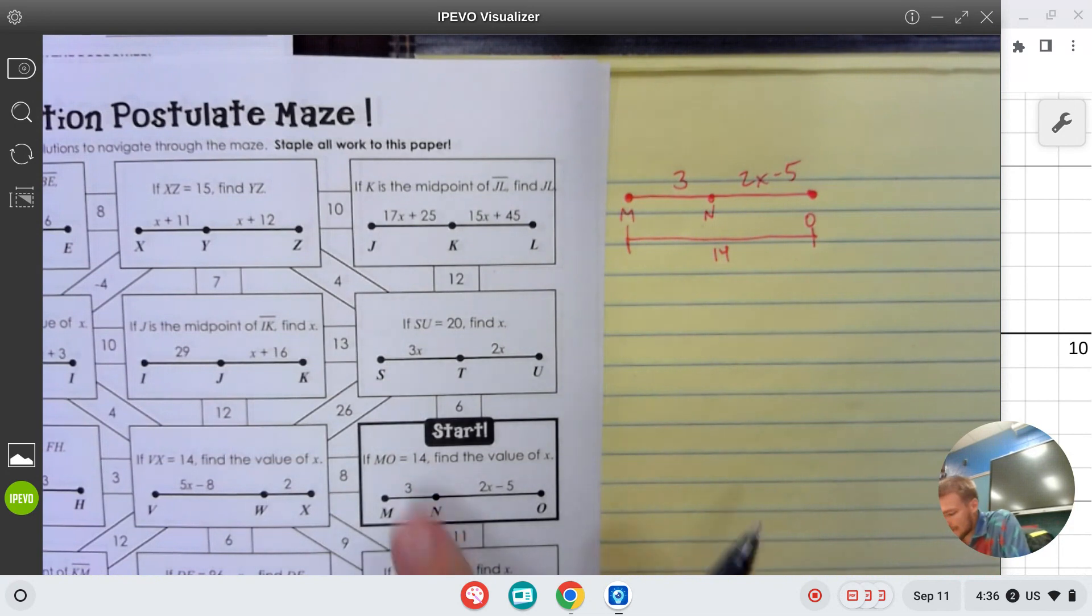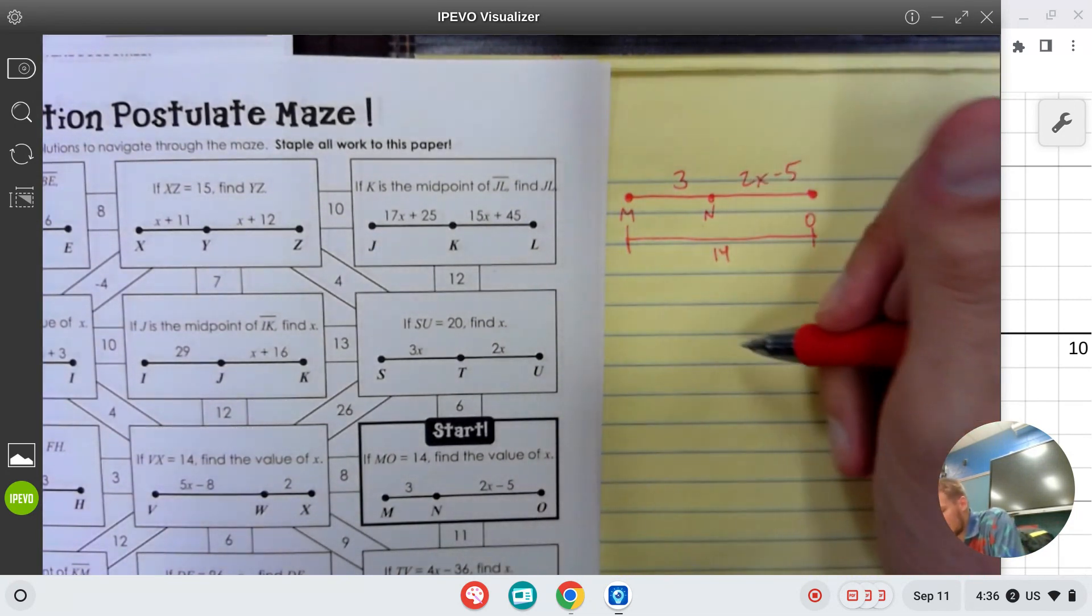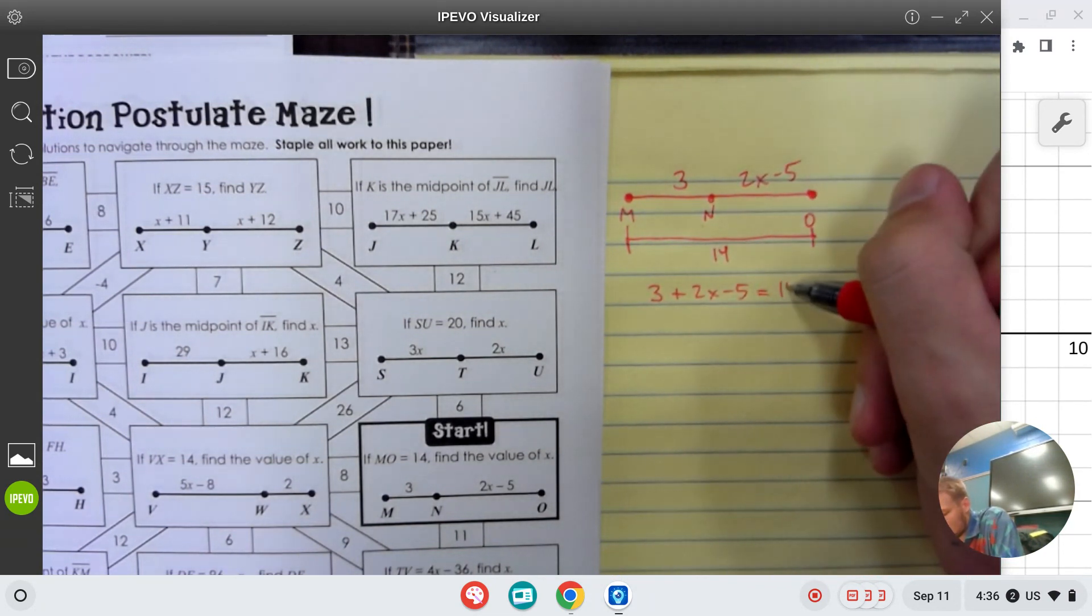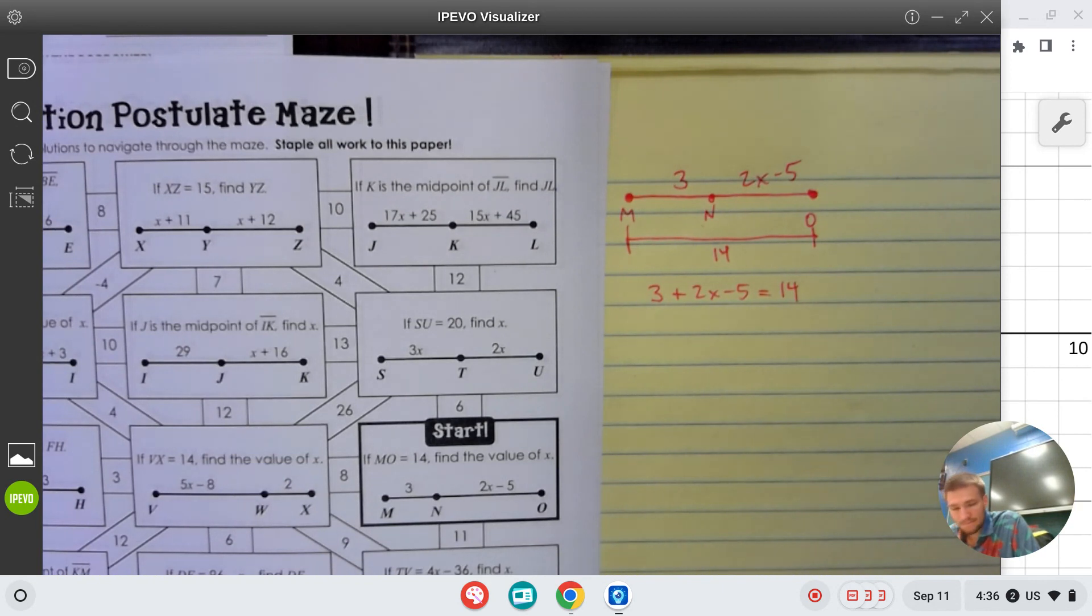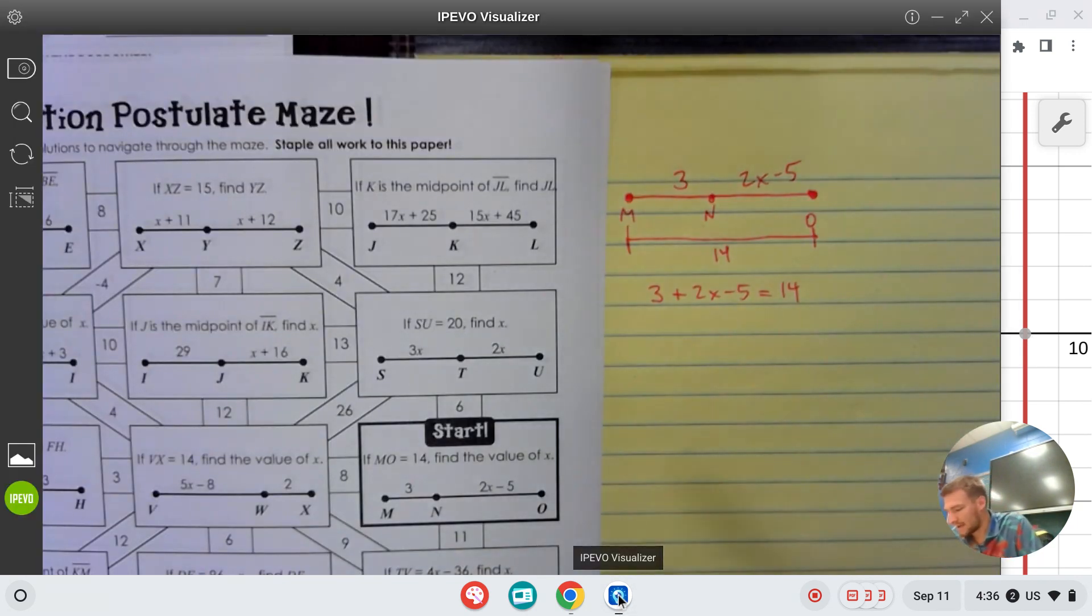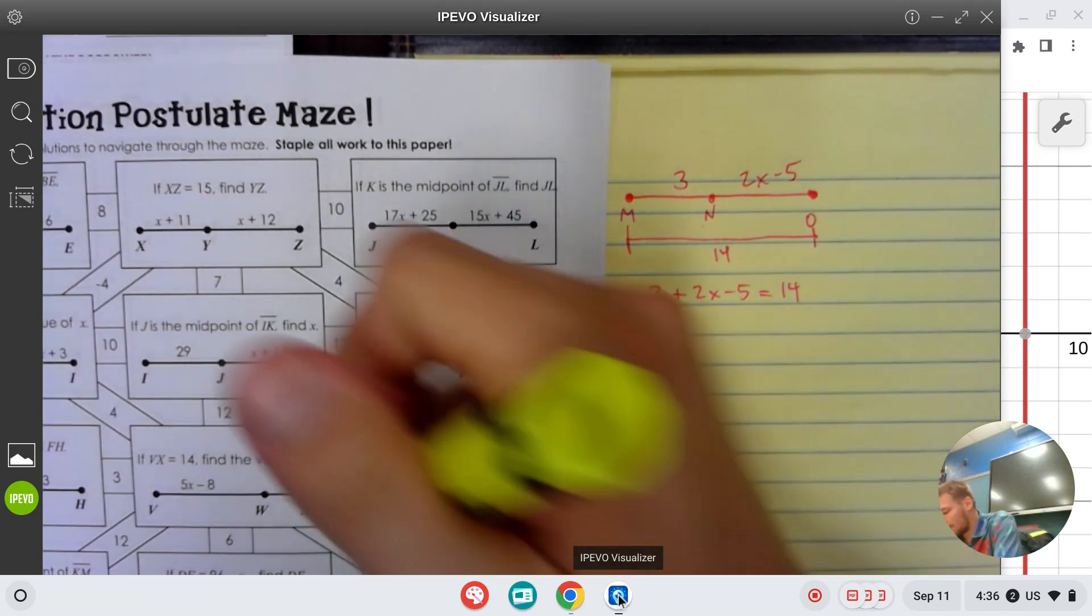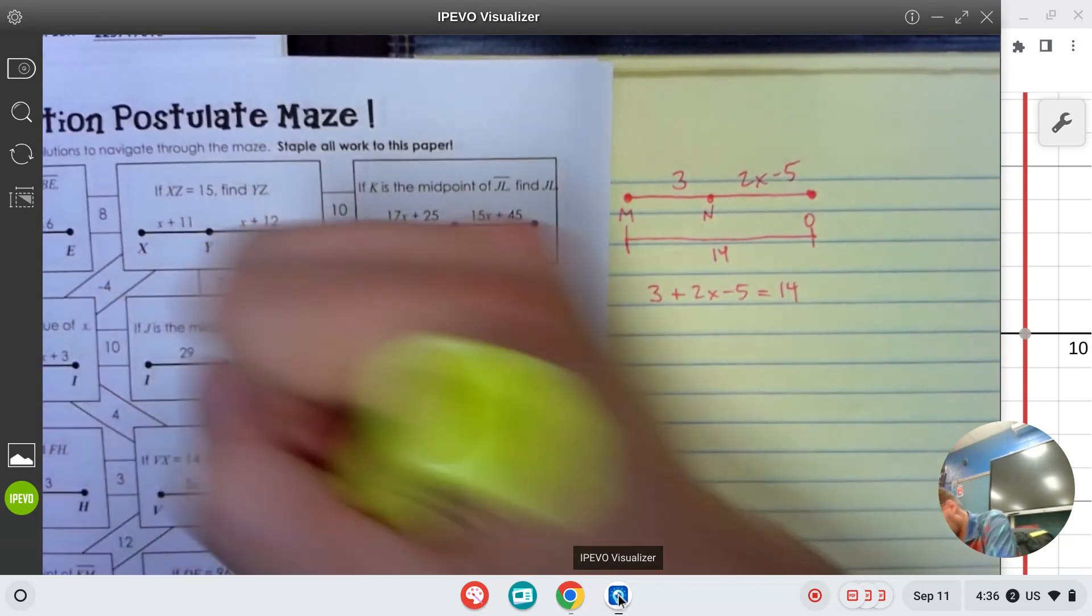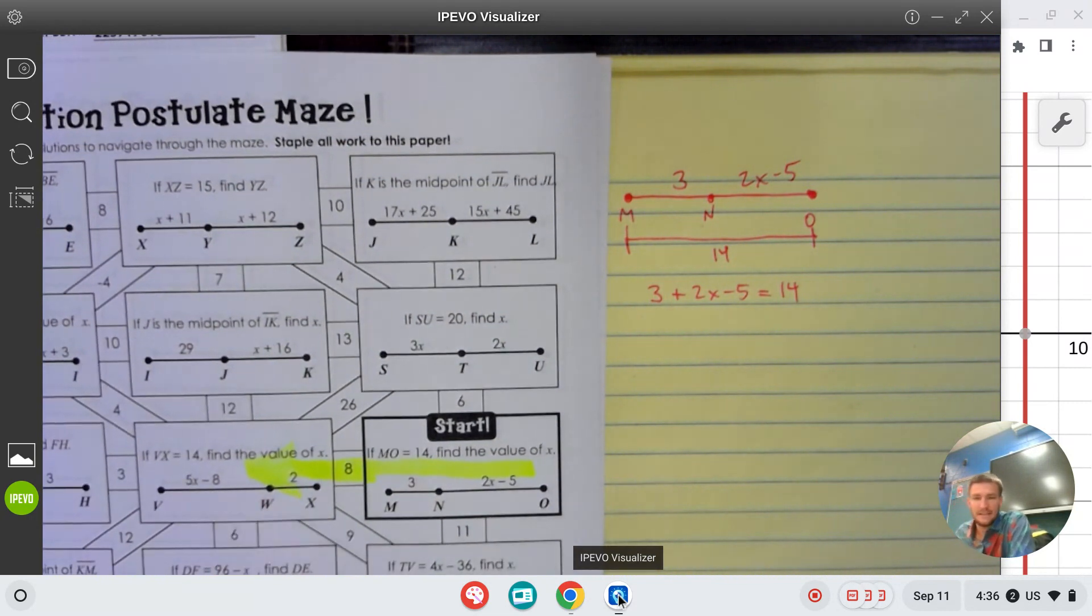This whole length here is 14. If we want to find the value of x, I'm going to set it up where the left plus the right equals the whole thing, and I'm just going to type that into Desmos. I'm going to look where it touches at 8. I'm going to cross my fingers that one of the paths leaving this box is 8. Here's my 8, I'm going to head this direction.